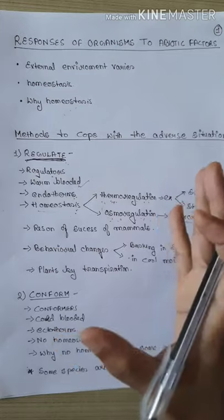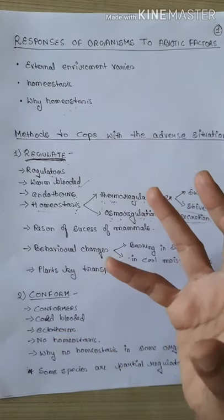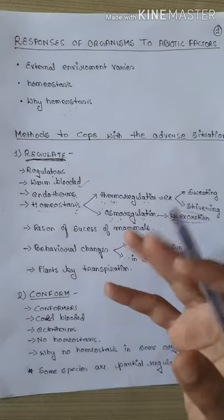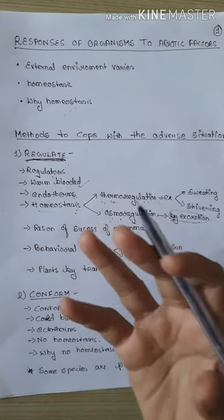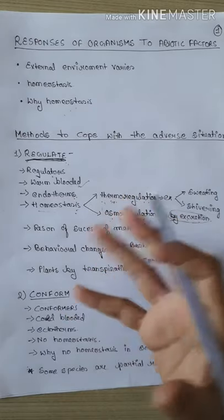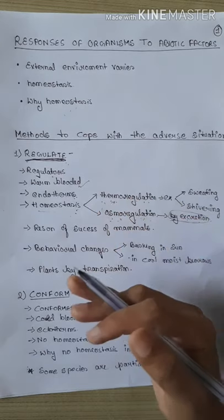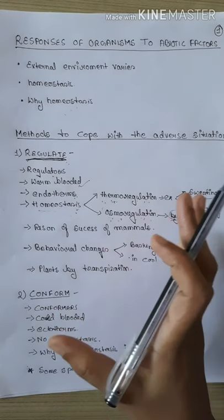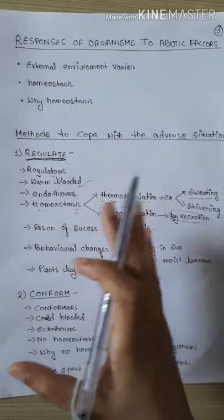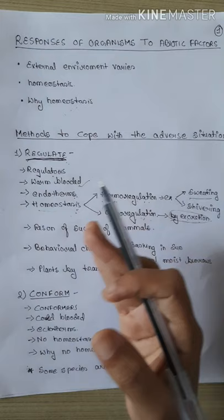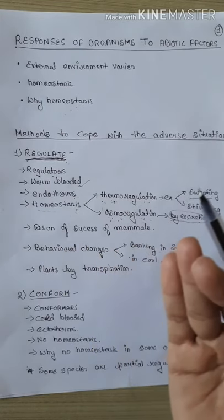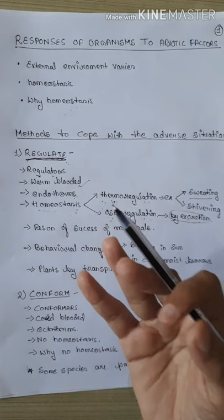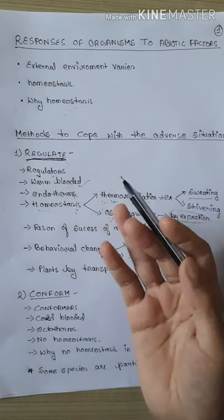Thermoregulation kaise karte hain — temperature kaise maintain karte hain? Iska ek example lete hain. Sare mammals including human beings ka average normal body temperature hota hai 37 degree centigrade. Ab maanlijiye bahut garmi pad rahi ho. Summer season mein usually 45 degree centigrade ya usse upar jab temperature chala jaata hai — jab humein garmi lagti hai to hum kaise adjust karte hain? By sweating. Jab bahut garmi hoti hai to humein paseena hota hai aur yeh jo sweat hai, yeh hamaari body surface par jab hava chalti hai to evaporate hota hai, aur dhire dhire hamaari body ka temperature maintain hota hai aur garmi lagna kam ho jaati hai.